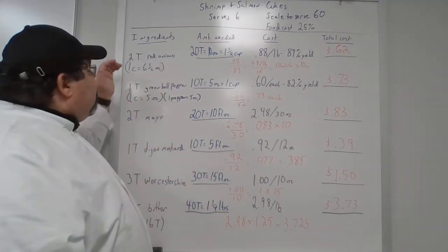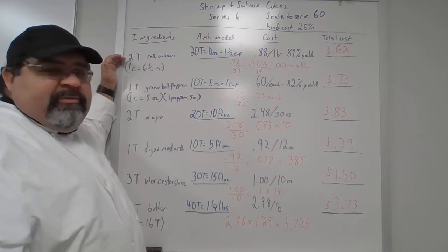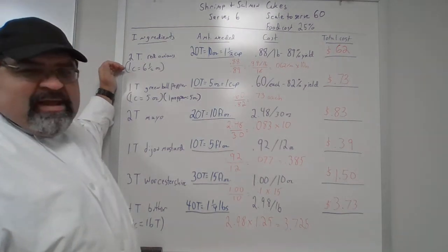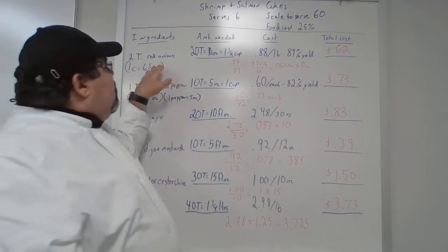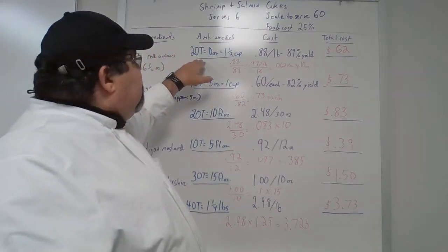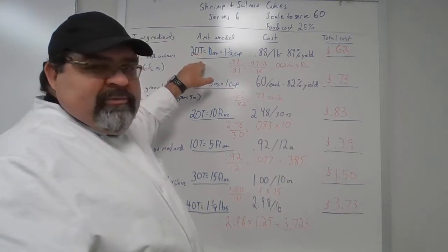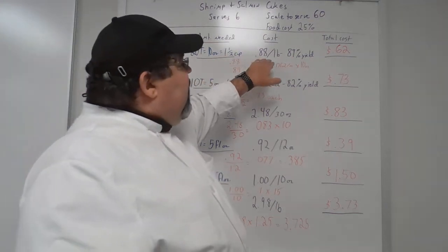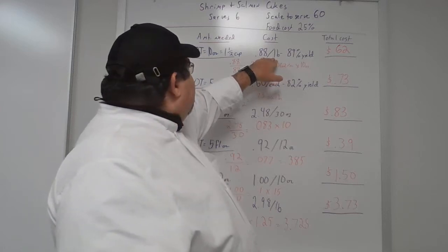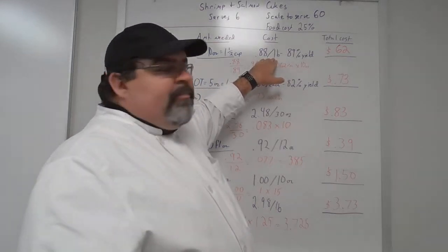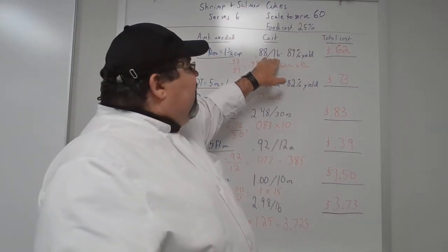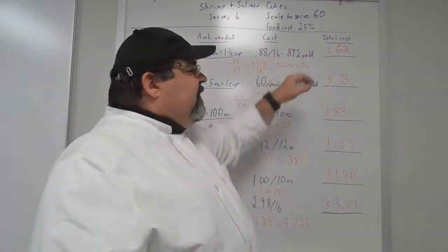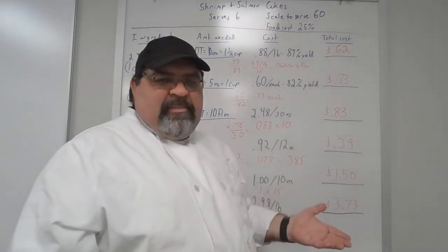The first ingredient is two tablespoons of red onions. One cup of red onions is about six and a half ounces. Two tablespoons times 10 gives us 20 tablespoons, or 10 ounces, or one and a half cups. The cost of the red onions is 88 cents a pound, and there's an 89% yield on those onions — meaning when you cut the onion up, you're going to get 89% of that onion.